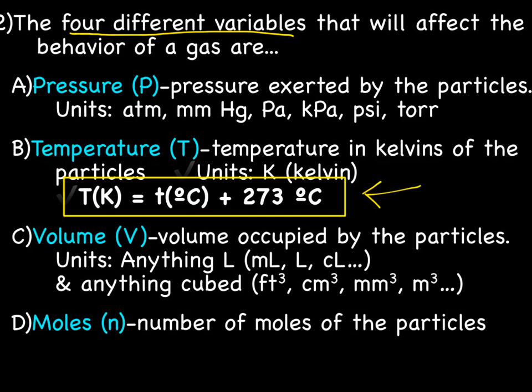Of these four variables, we're going to spend the most time working with pressure, temperature, and volume. The last variable is number of moles, represented by a lowercase N — not M, because capital M is molarity and lowercase m is meters. We will not be talking about moles until later. Today we'll be dealing with temperature and volume. Once again, you need to know the names (pressure, temperature, volume, moles), the abbreviations (P, T, V, N), and be familiar with the units.